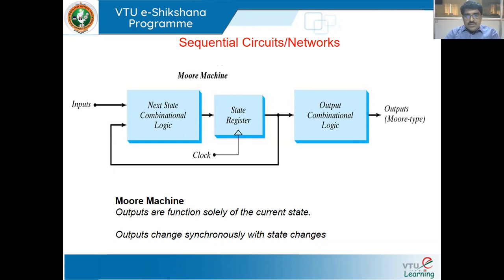So what is a Moore machine? In the Moore machine or Moore sequential network, outputs are a function solely of the current state. Output depends only on the current state. Output changes synchronously with the state changes — the moment any state changes, the output changes in synchrony with them.